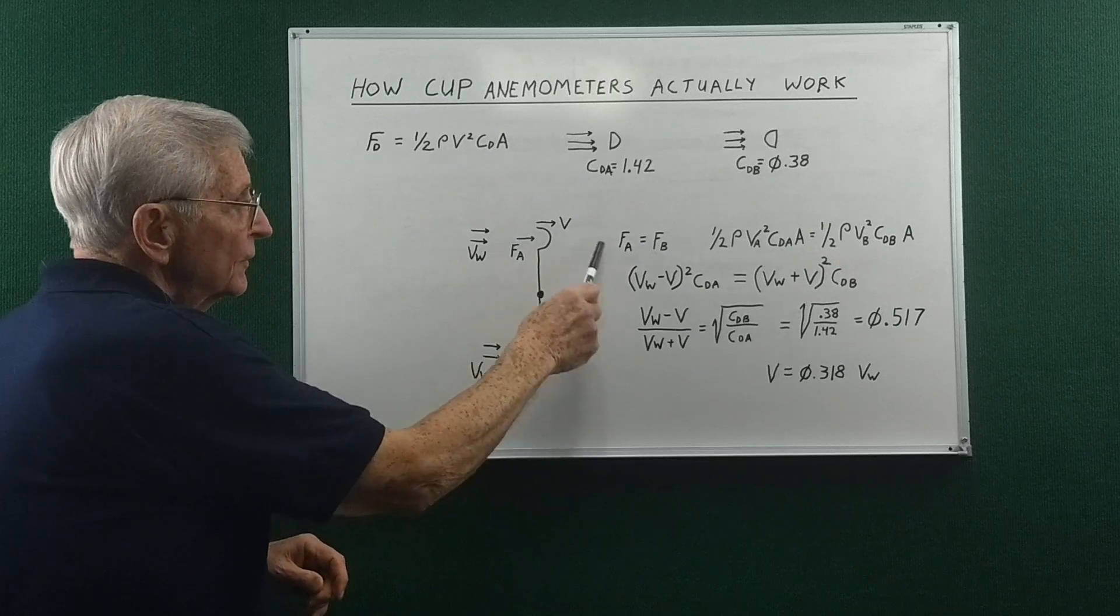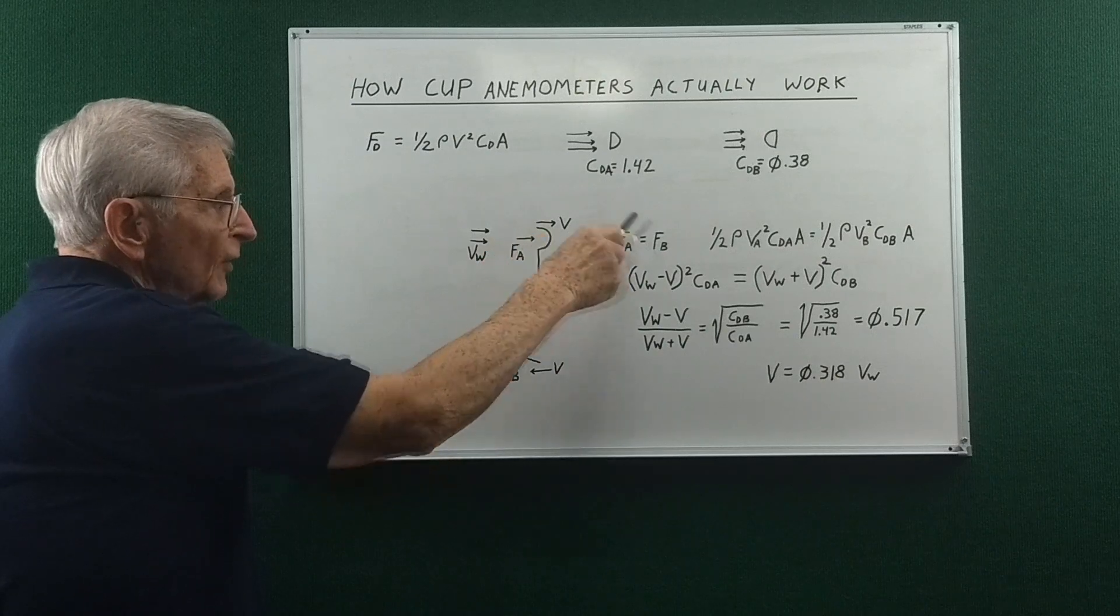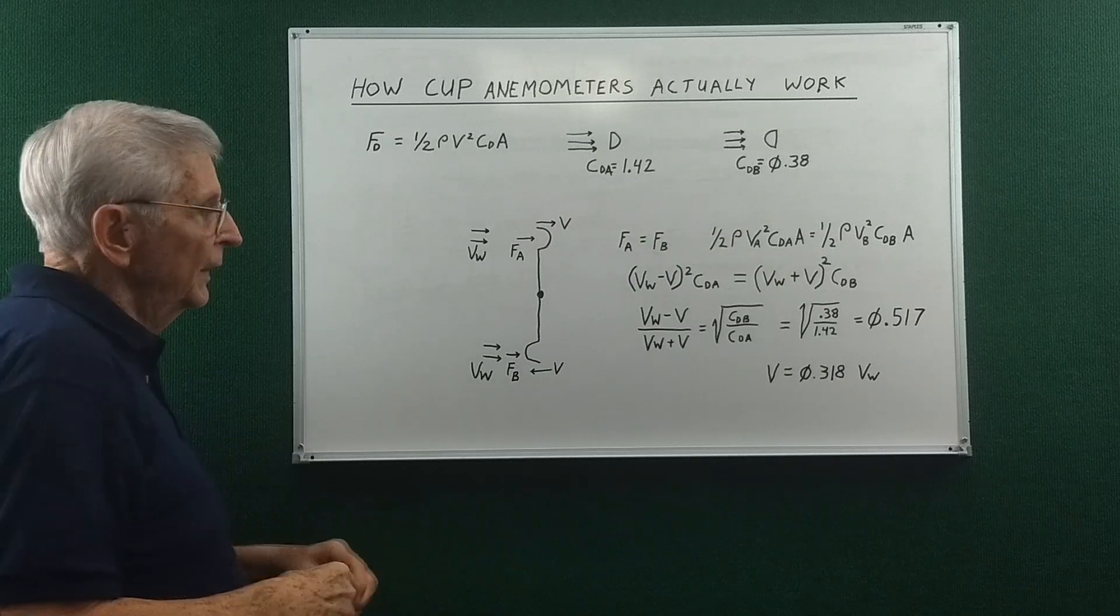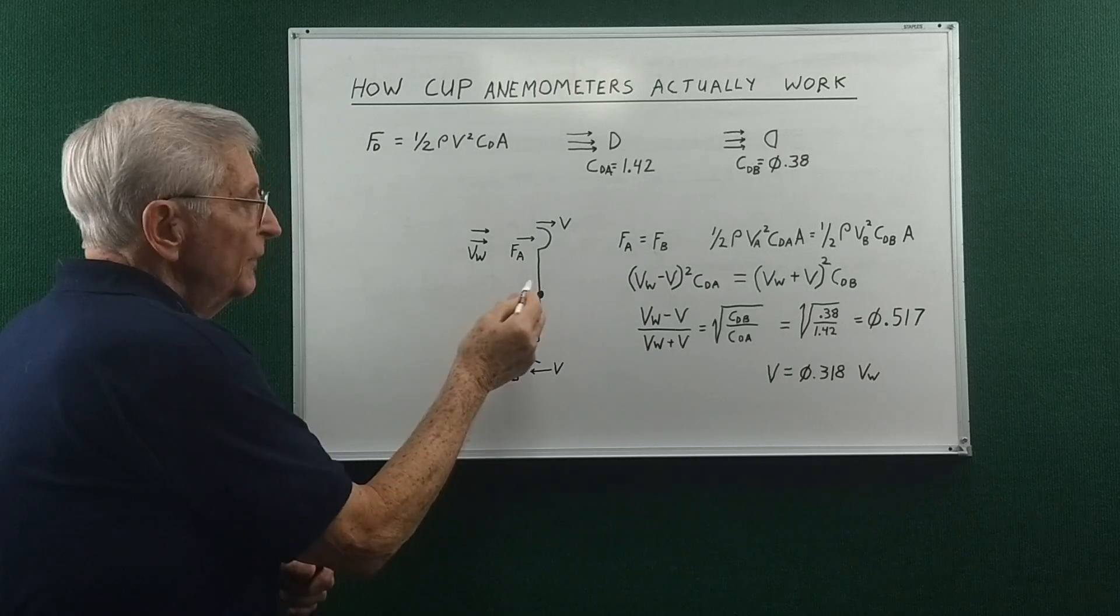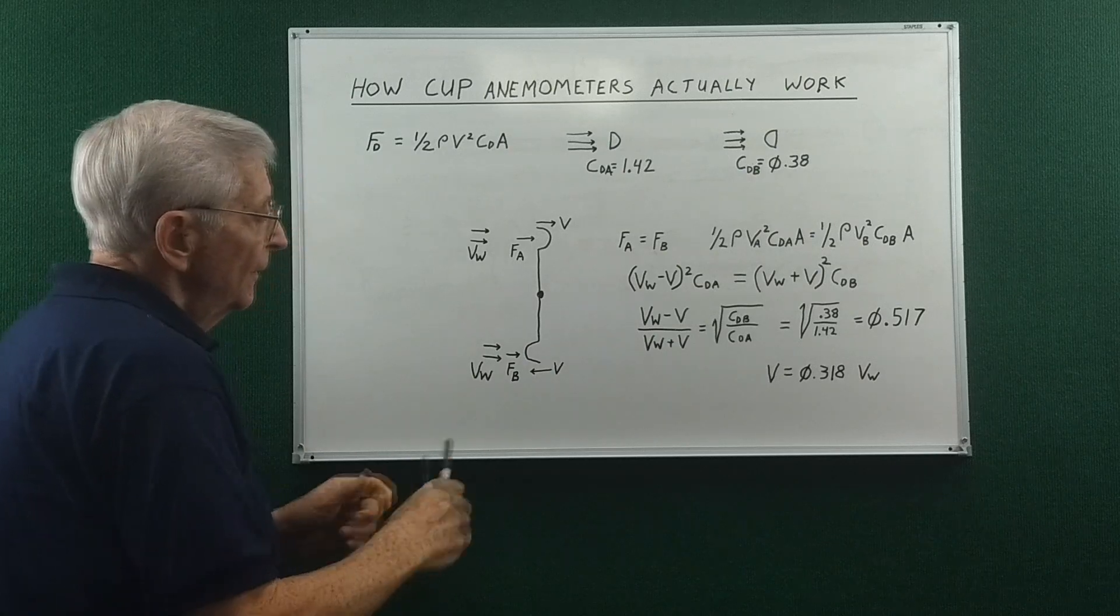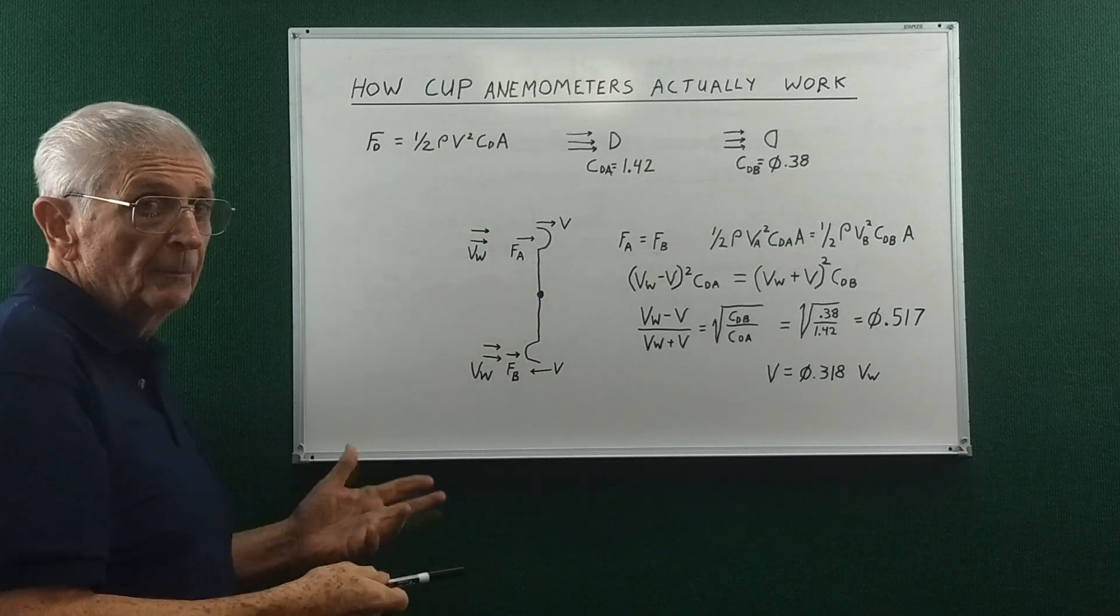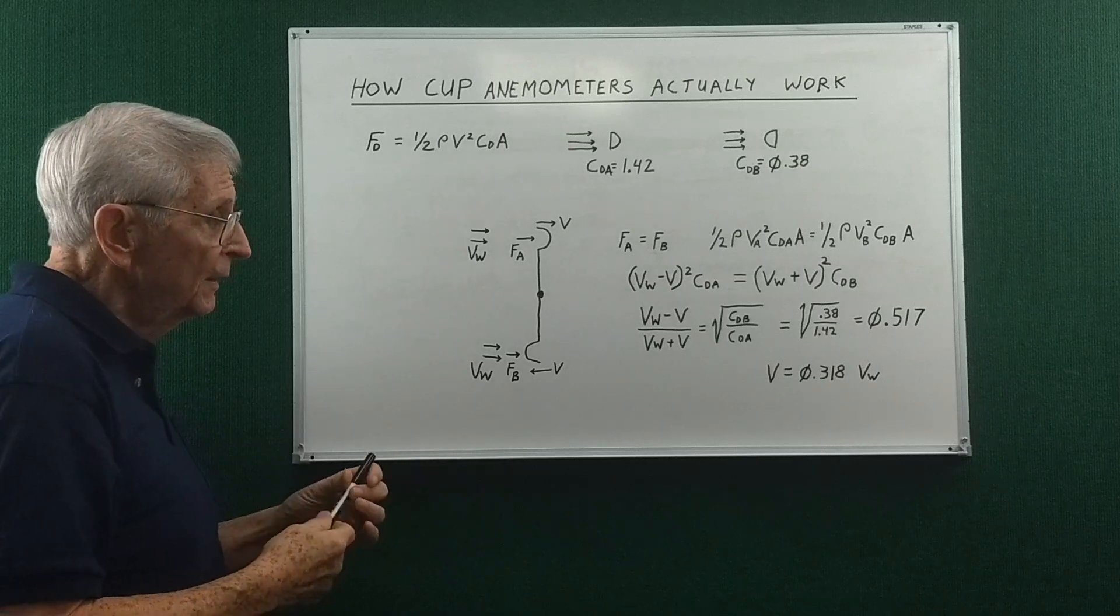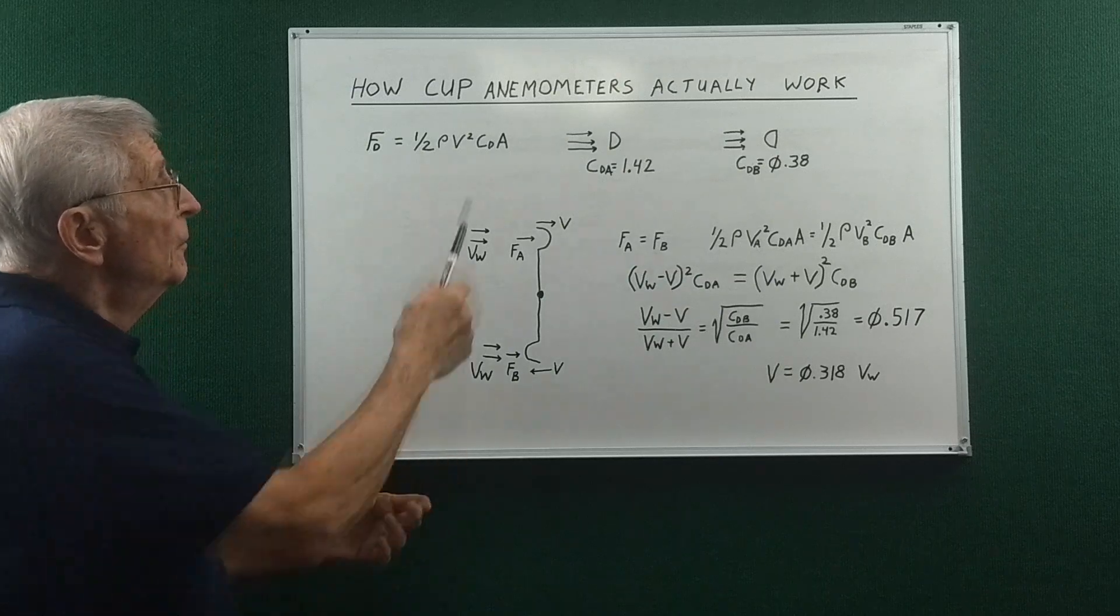So this is how they actually work. Taking the circumference here and assuming that it's spinning at the same velocity as the air is not correct. So like I say, for any given design there's going to be forces on the support arms and so forth. And in the other videos you saw different shapes for the cups. So there's many variables. So for any given design you have to calibrate it. So that's the main point. That's how they actually work.